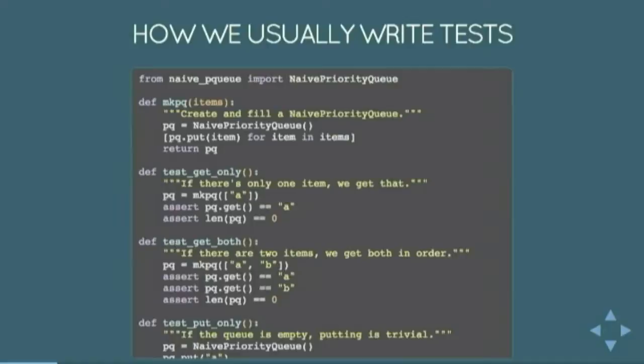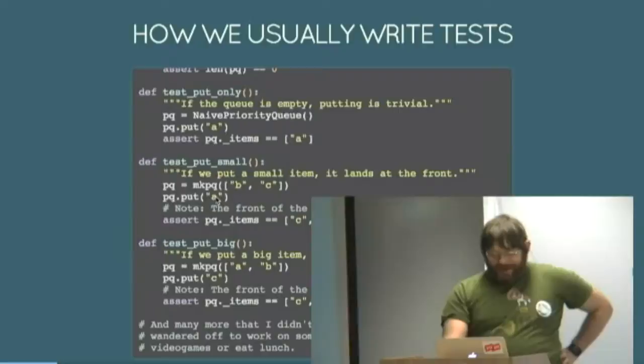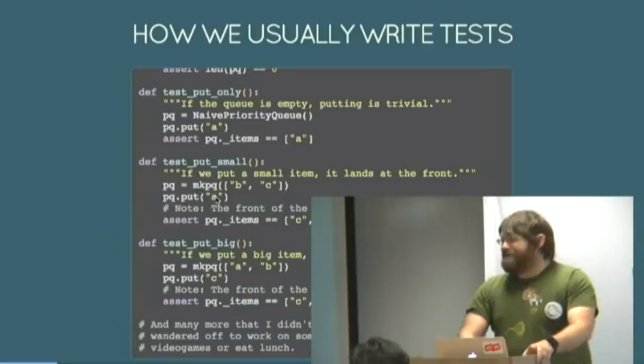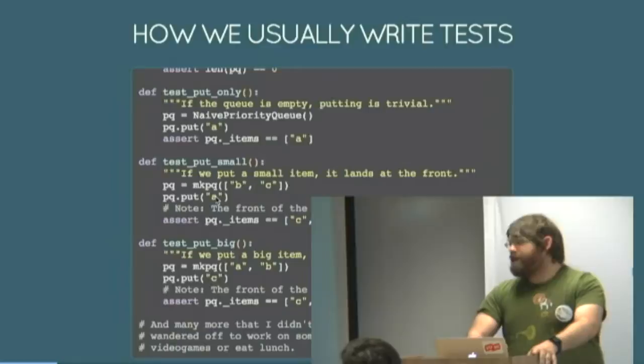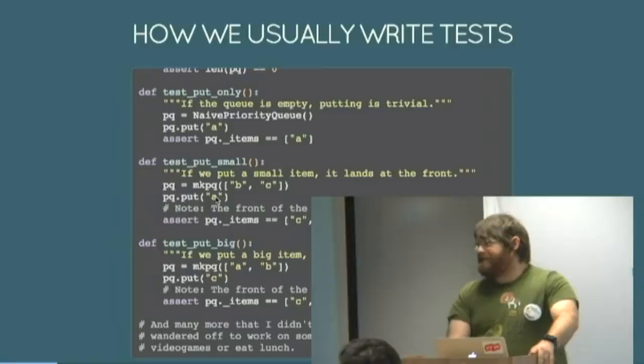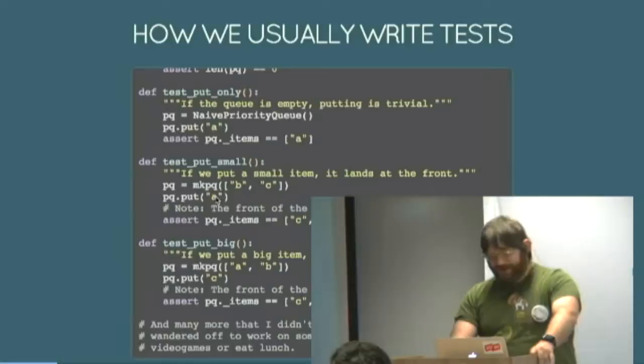So how do we usually write tests? You've got your implementation. You write a bunch of tests. Each test creates a queue, puts some stuff in it, takes some stuff out of it, makes sure that what you get out is the right kind of thing. And there are lots of tests and they're not nearly enough because I got bored and did something more interesting like fighting CSS to make my presentation stuff work. There's going to be a lot of code in these slides.